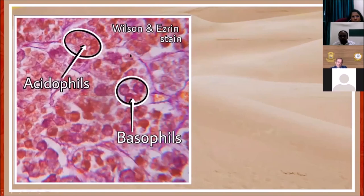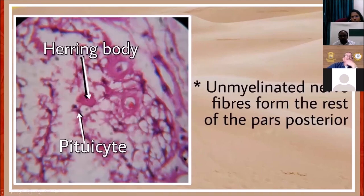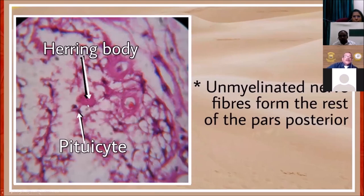If you are lucky, you can use special stains and still see acidophils and basophils — I think this is Wilson's eosin stain. Same way, herring bodies — just like you saw mossy fiber terminals — are also visible, but you have to catch them by scanning through the slide. A herring body is nothing but pooled secretion. Around it you can see the pituitocytes. It is believed that pituitocytes control the amount of secretion; invariably in the neighborhood of a herring body, you will see a capillary and plenty of pituitocytes.